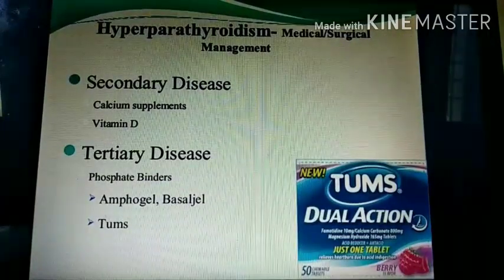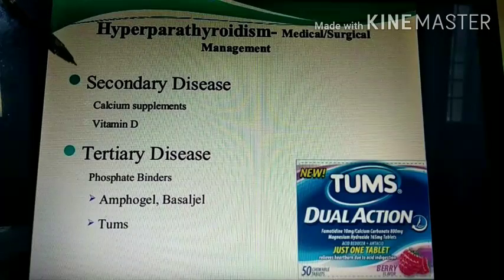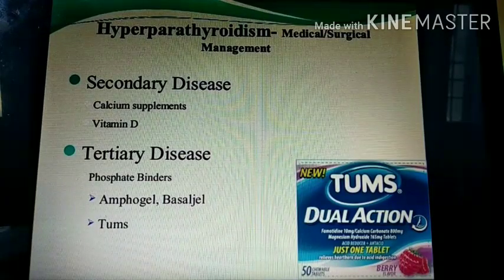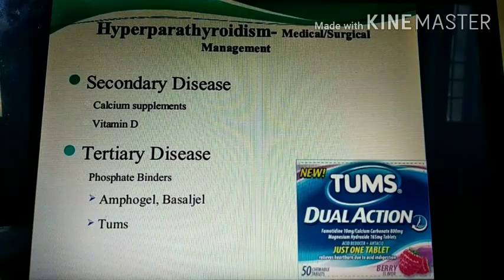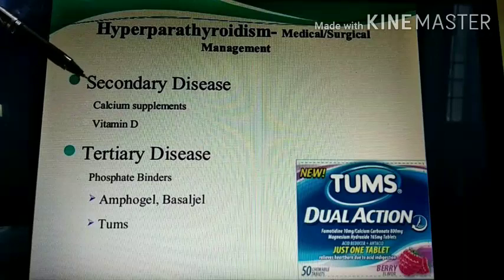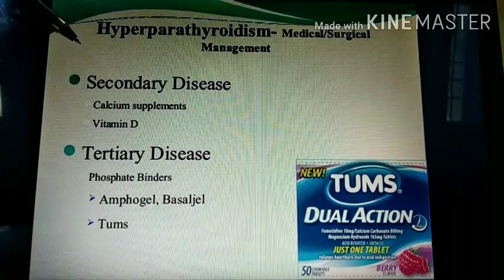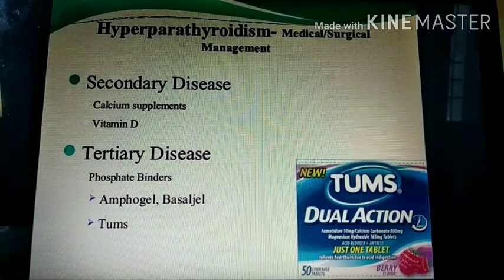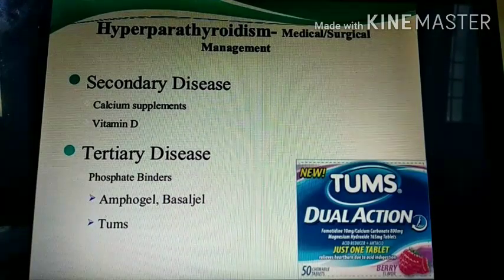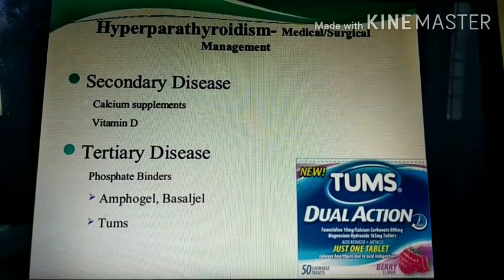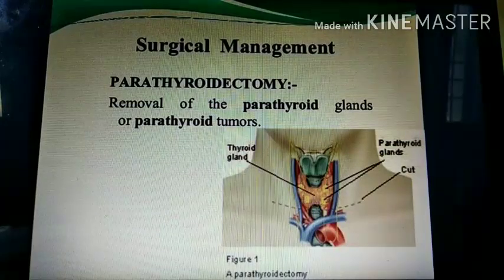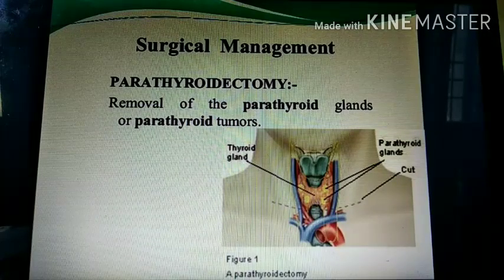Gallium nitrate can also decrease calcium levels by increasing phosphate. For secondary hyperparathyroidism, calcium supplements and vitamin D can be given, because treating the deficiency will decrease PTH levels. For tertiary disease, phosphate binders are given. Surgical management includes parathyroidectomy — removal of the parathyroid gland or parathyroid tumor.